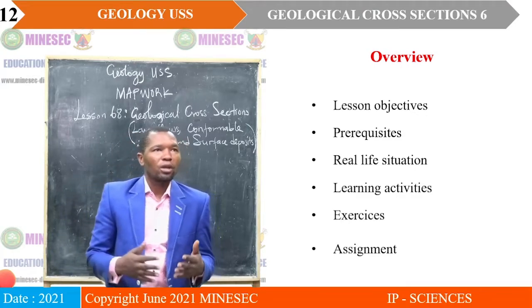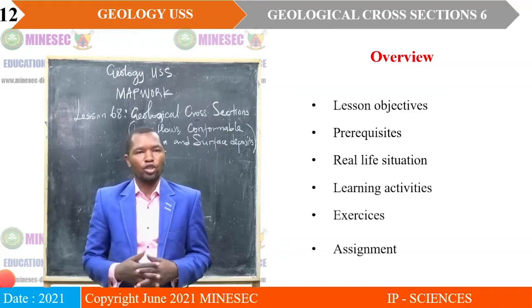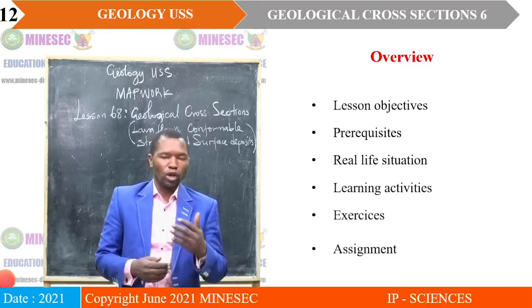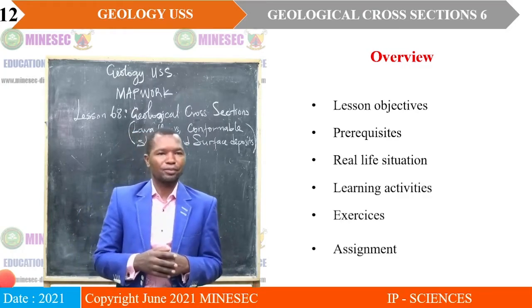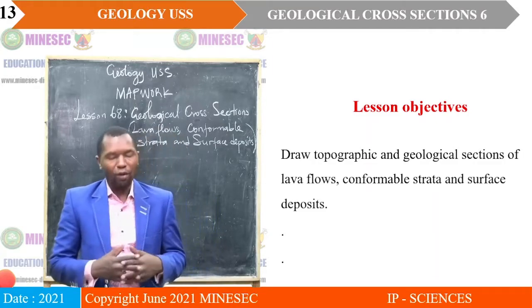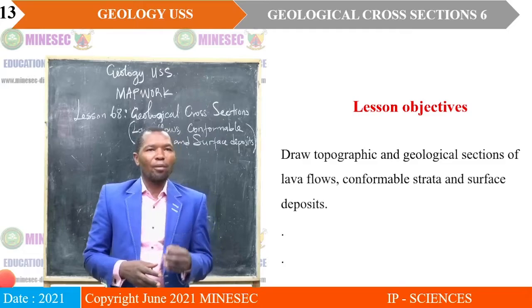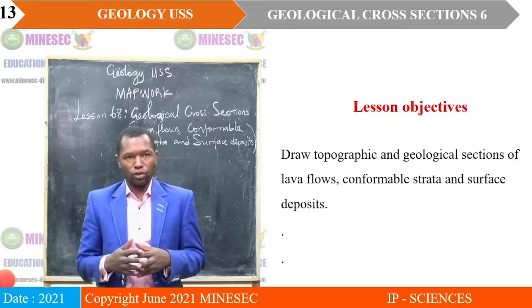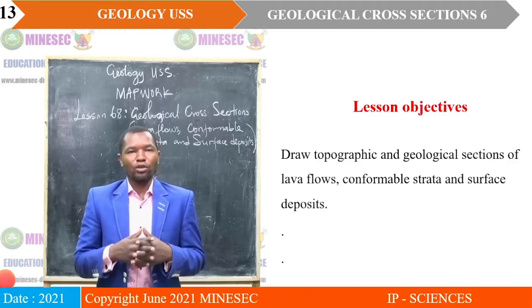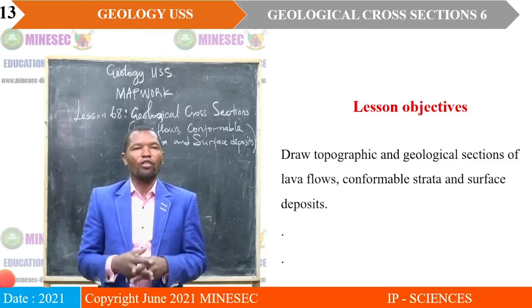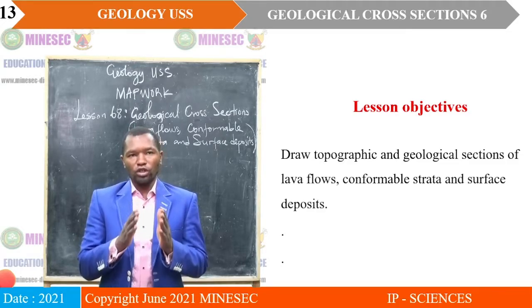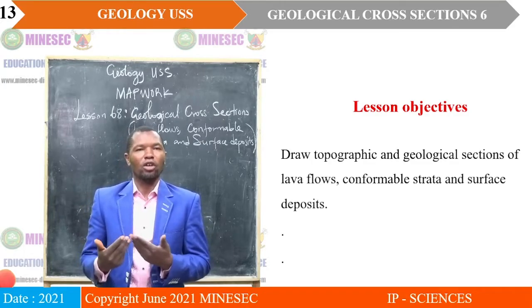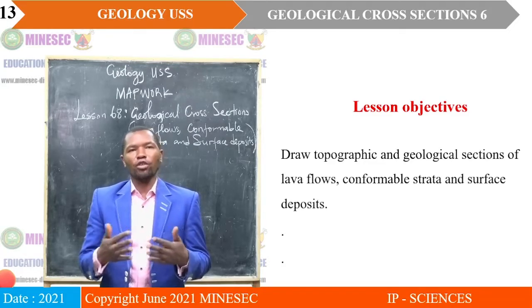In our lesson we will look at objectives, prerequisites, and a real-life situation. Then we will have learning activities, exercises, and end with an assignment. At the end of our lesson, we will be able to draw topographic and geological sections of lava flows, conformable strata, unconformable strata, and surface deposits. We will concentrate more on conformable strata, because if we understand how strata conform, we will understand equally the irregularities that may come in.